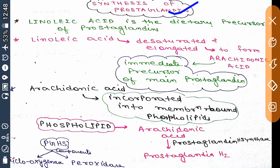We are going to discuss prostaglandin. First, we will discuss the synthesis of prostaglandin. Basically, linoleic acid is the dietary precursor for the synthesis of prostaglandin. Linoleic acid is desaturated and elongated to form arachidonic acid, and arachidonic acid is the basic precursor.